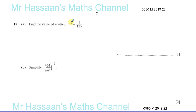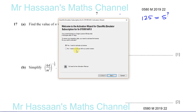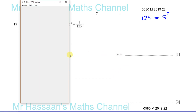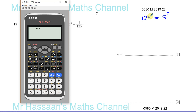So this is 5 to the power of something. Now 125 — we have to try and figure a way of expressing it as 5 to the power of something. If you're not sure, you can try: 5 squared is 25, that's not 125. Then try 5 cubed — that's 125. So we know that 5 cubed is 125.